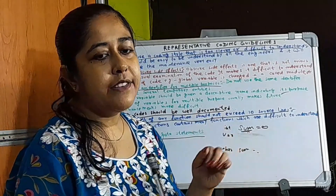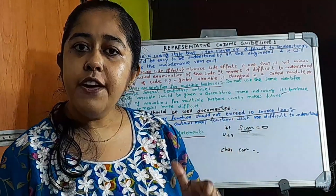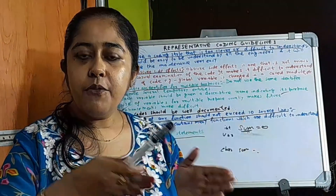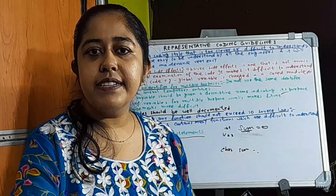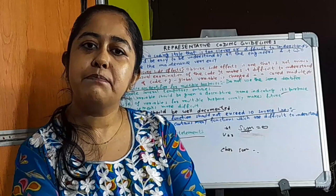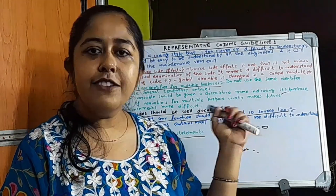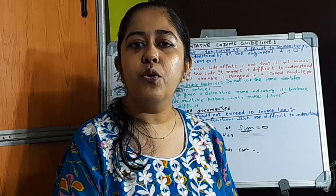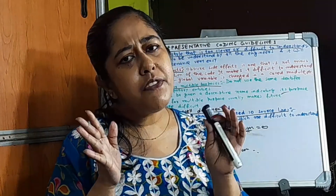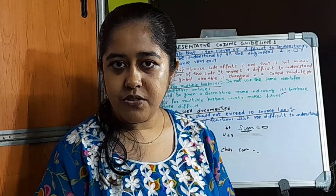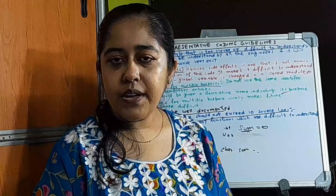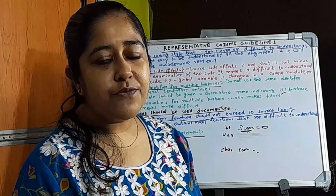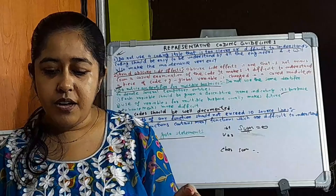These are the basic guidelines to follow while writing code. As we have seen in the SDLC model, every particular phase reflects an effect on the next phase. By following these coding standards and guidelines, any person dealing with this code — in this phase or future phases — will find it easy to understand and move to the next phase. In the next class, we will see code walkthrough and code inspection.